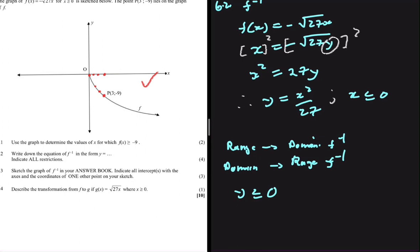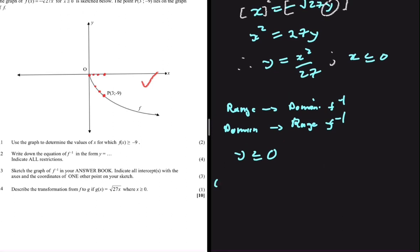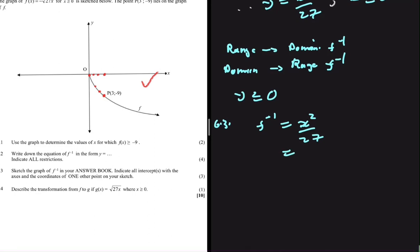6.3 Sketch the graph of f inverse in your answer book. Indicate all intercepts with the axis and coordinates of one other point on your sketch. We have f inverse being equals to x squared divided by 27. This is the same as 1 divided by 27 multiplied by x squared. So we have a quadratic function.